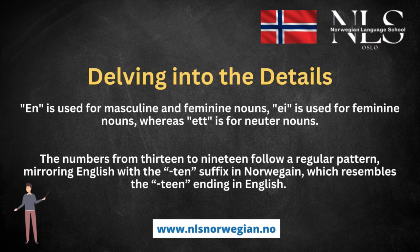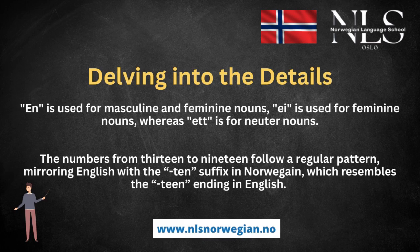Delving into the details — in Norwegian, the number 1 has three variations: en, ei, and et. The distinction depends on the gender of the noun it modifies. En is used for masculine and feminine nouns, ei is used for feminine nouns, whereas et is for neuter nouns. The numbers from 13 to 19 follow a regular pattern, mirroring English with a -ten suffix in Norwegian, which resembles the -teen ending in English. Recognizing this pattern can facilitate easier memorization.